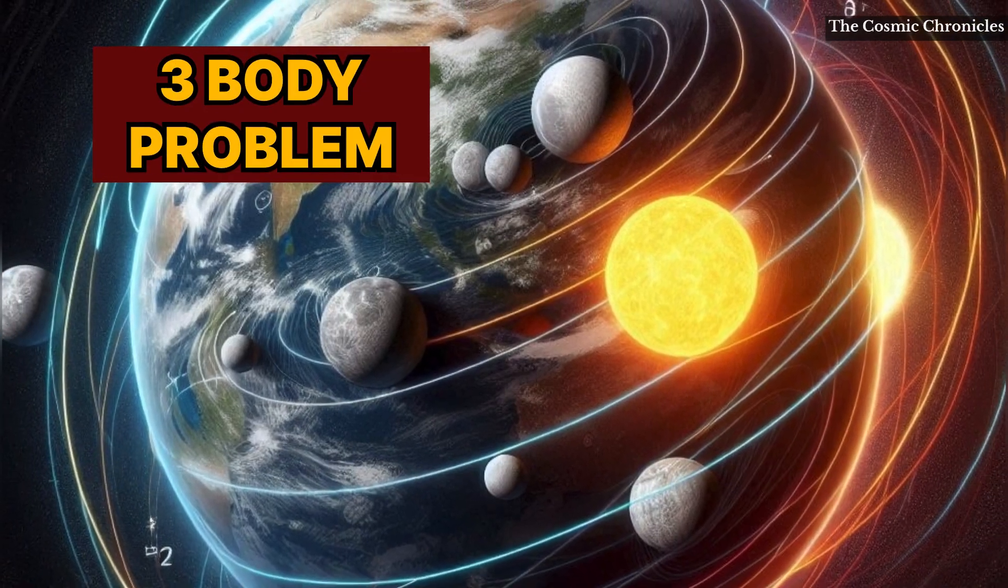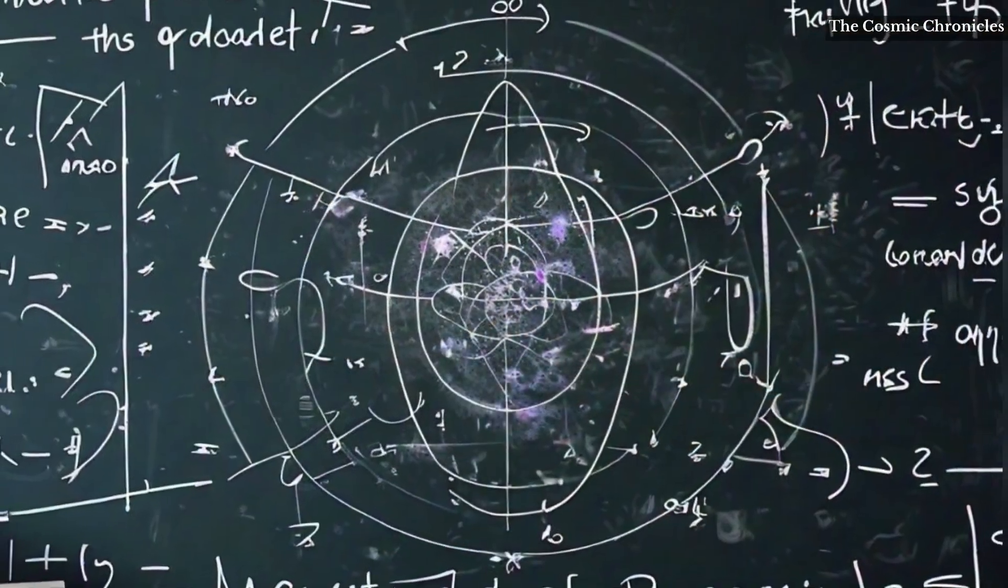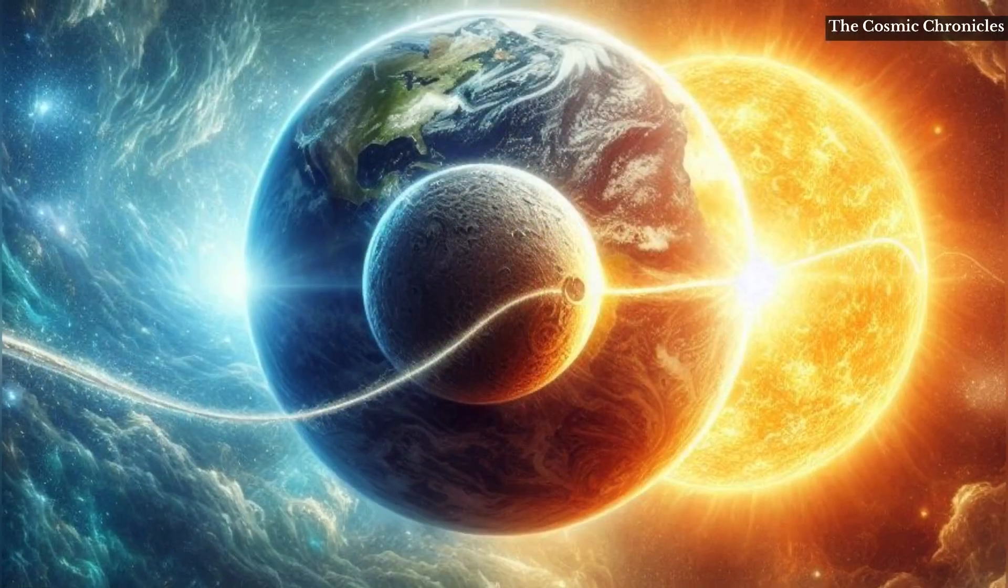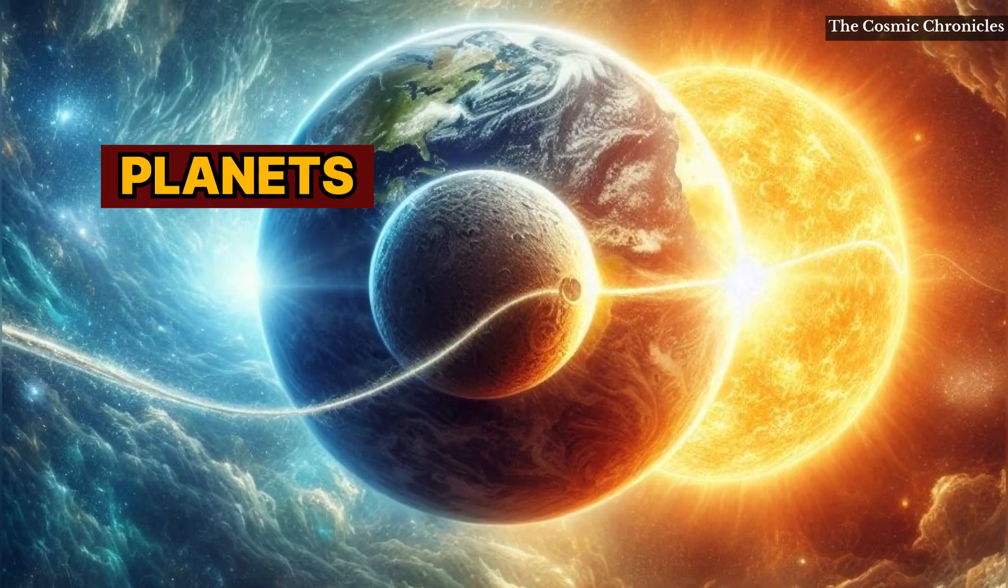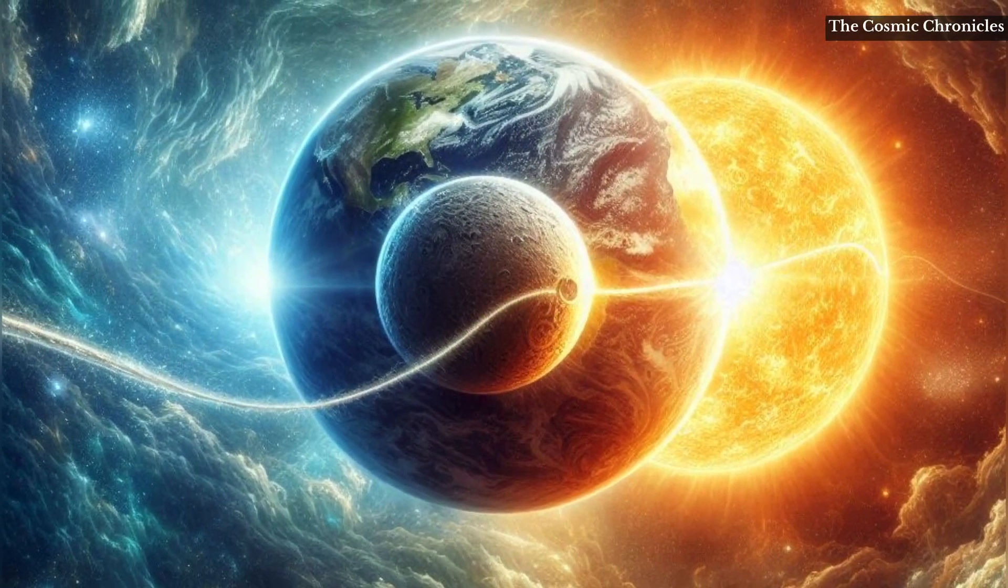The three-body problem is a classic problem in physics and mathematics that involves predicting the motion of three celestial bodies, such as stars, planets, or moons, that interact with each other through gravity.